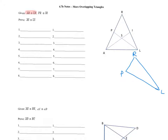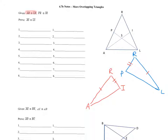Now think about the triangle that matches that but overlaps it — that would be triangle AIR. So this would be A, this would be R, this would be I. Let's mark what we know: AR is congruent to LR, and PR is congruent to IR.